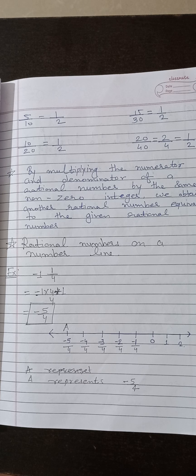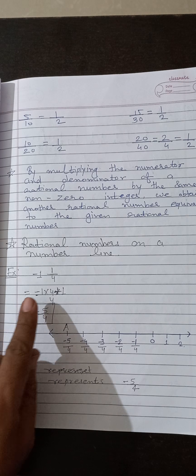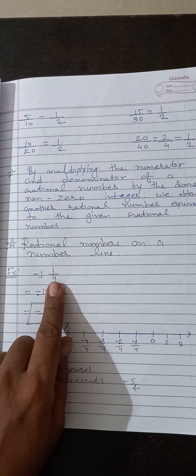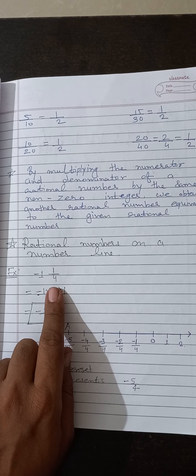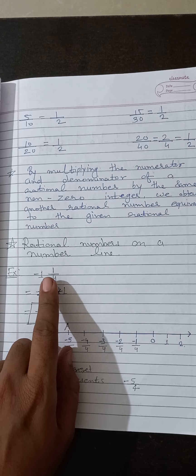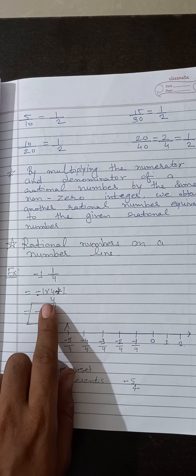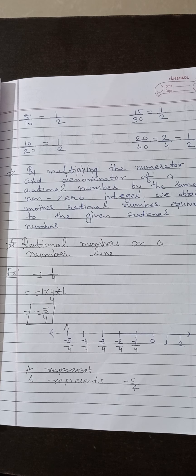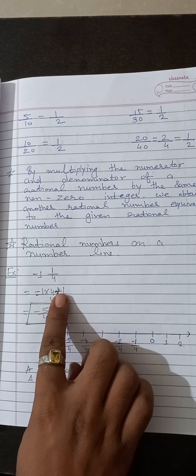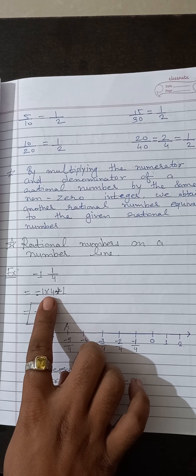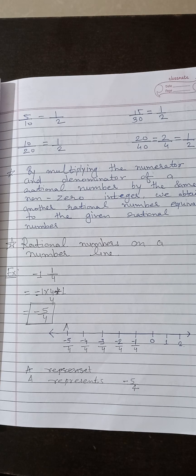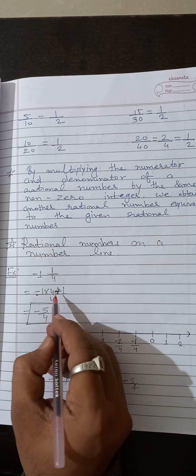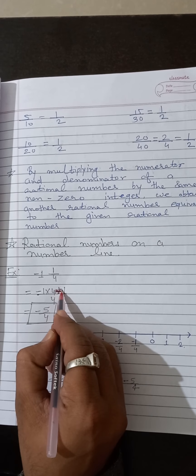Now we can draw numbers on the number line. Here the question is minus 1 by 4. We divide the segment into 4 equal parts, then minus 1. Remember: 4 plus 4 gives us the denominator, and minus 1 is the numerator. So here we will come to minus — students remember that it is minus.